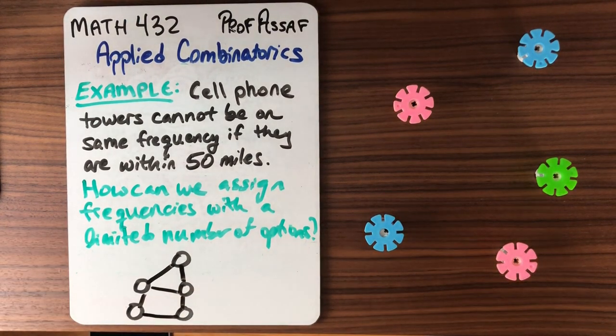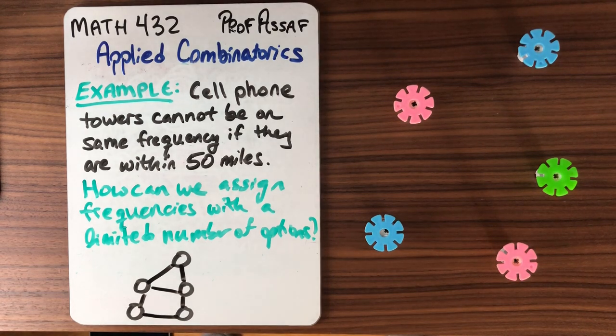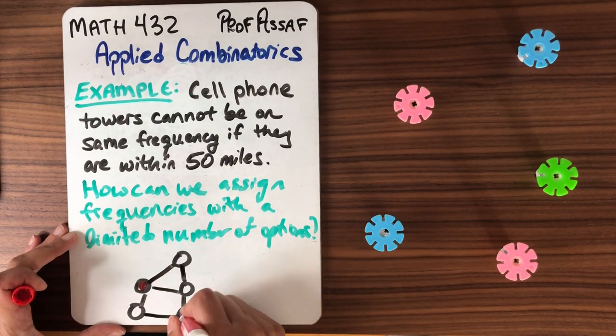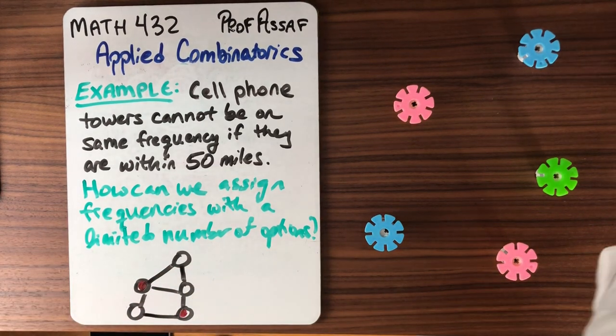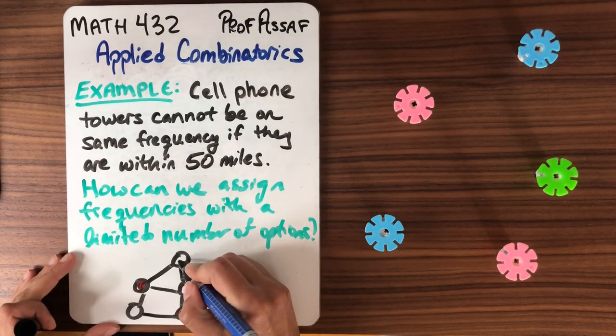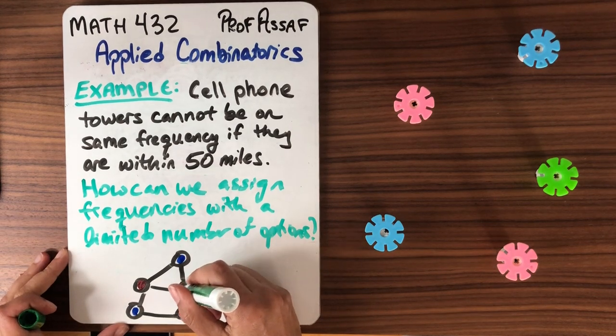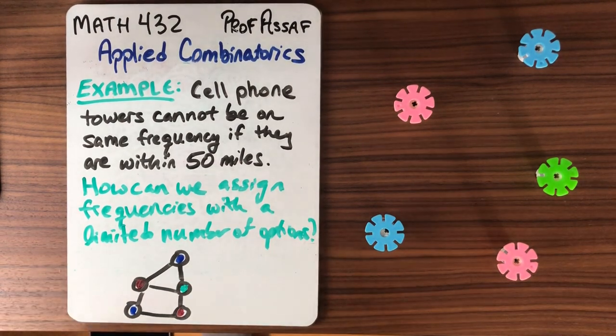So now the question is, how can we assign colors to the vertices so that we don't have what's called a monochromatic edge? We've colored this one red and this one red. We've colored this one blue and this one blue, and we colored this one green. So this is one solution to the problem, and this brings up the problem of graph coloring.